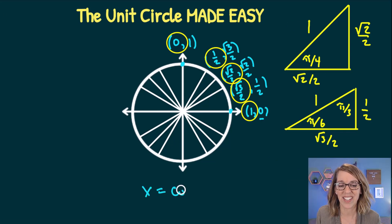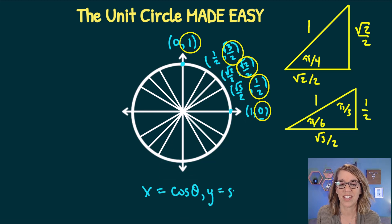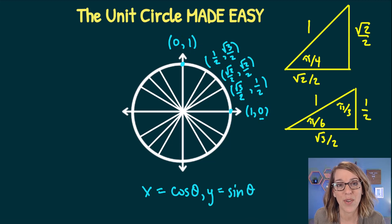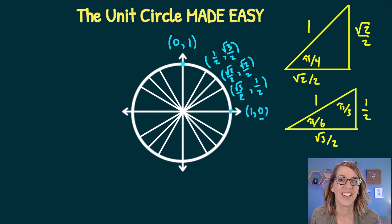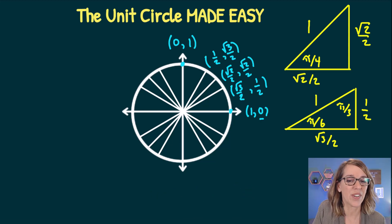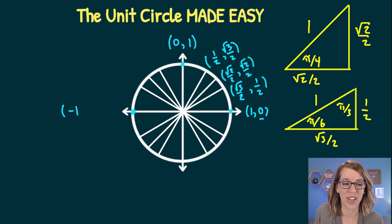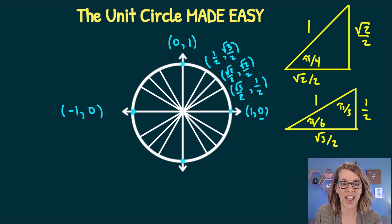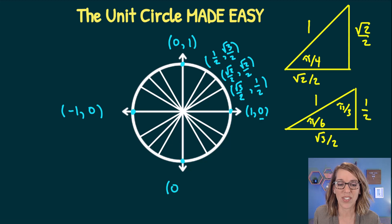On the unit circle, x is the cosine of the angle and y is the sine of the angle. To extend to all four quadrants, starting with the 90-degree axis points: at 180 degrees, x = −1 and y = 0; at 270 degrees, or 3 pi-halves, x = 0 and y = −1.